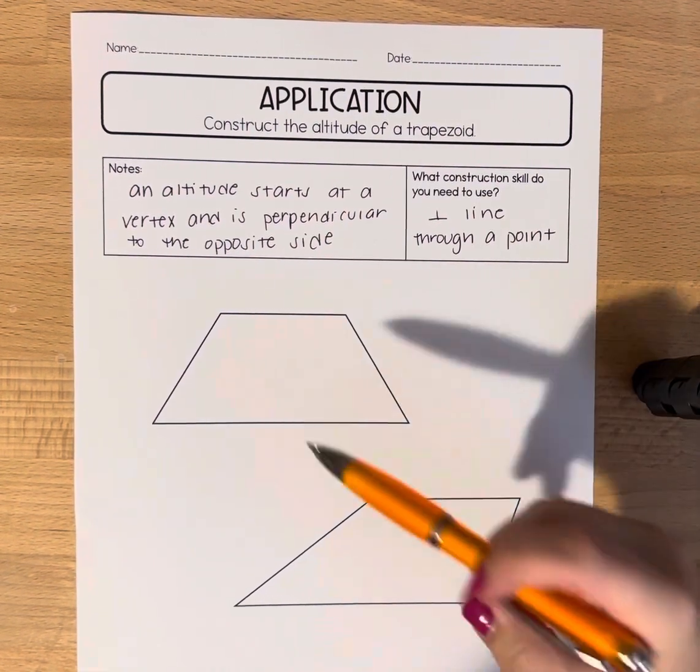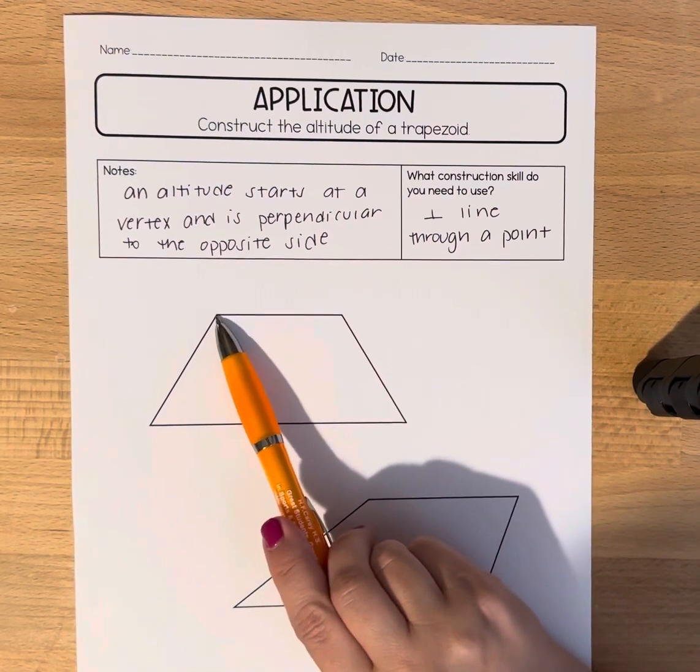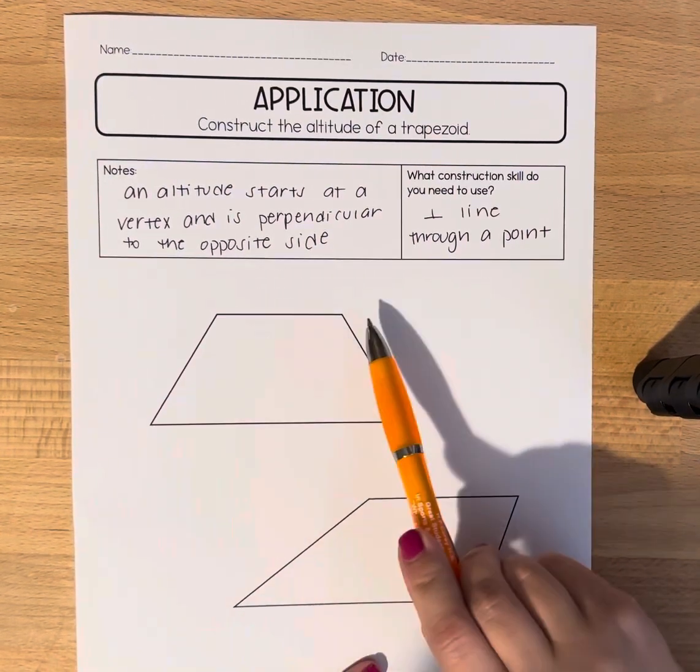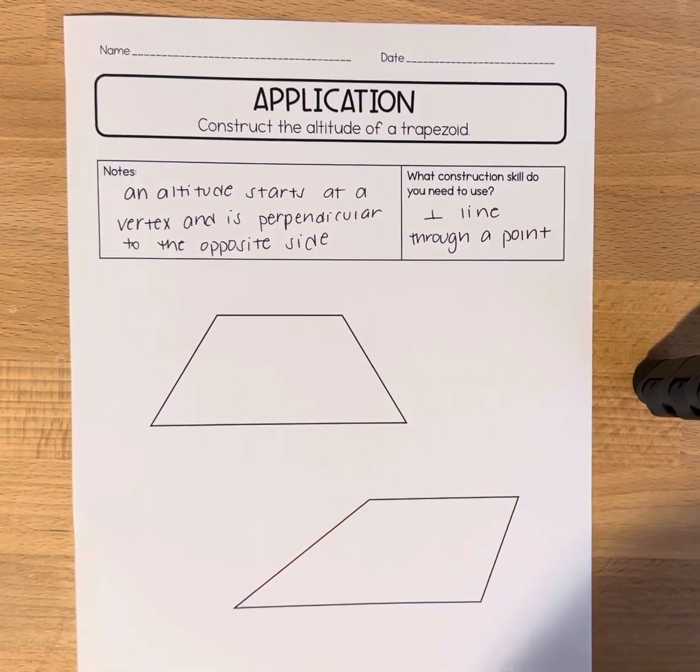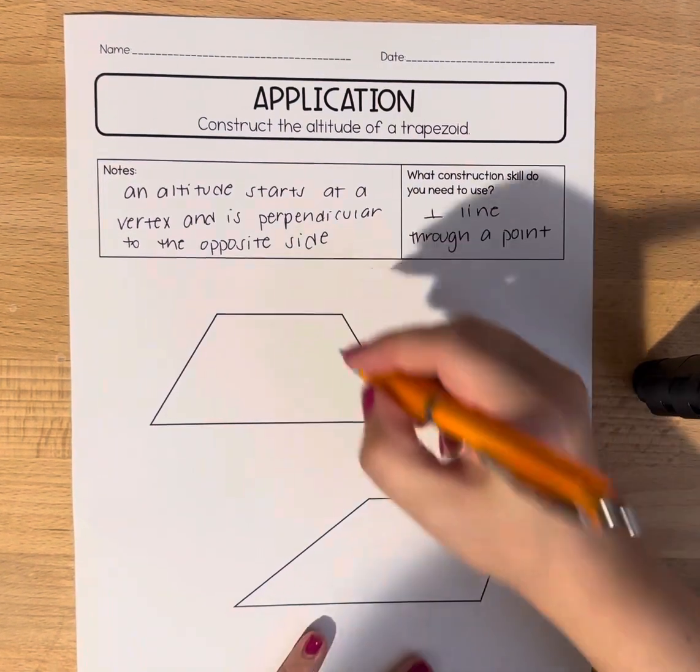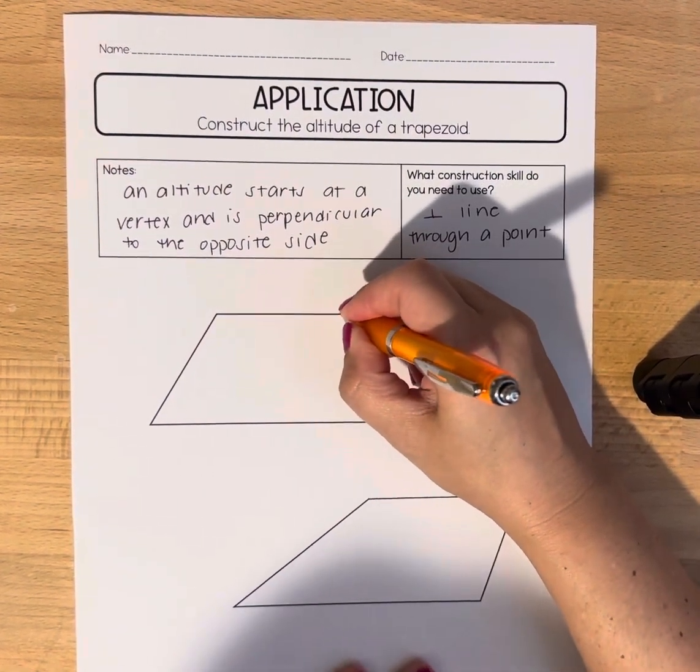All right, let's take a look at this trapezoid. So we could draw an altitude starting at this vertex going down or this vertex going down. It doesn't matter which one you choose. So I'm just going to pick this one over on the right hand side.